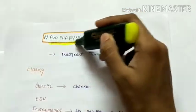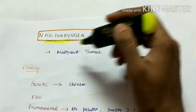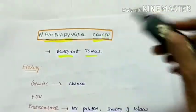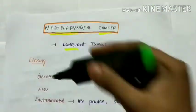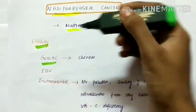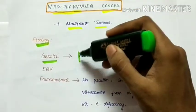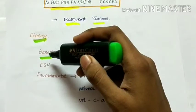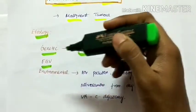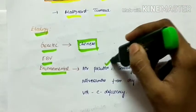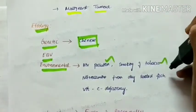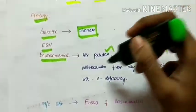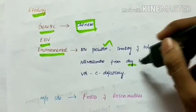Let's discuss nasopharyngeal carcinoma, which is a malignant tumor of the nasopharynx. Etiology: The genetic causes - nasopharyngeal carcinoma is more commonly seen in Chinese population and is associated with Epstein-Barr virus infection. Environmental causes include air pollution, smoking of tobacco, and nitrosamine which is seen in dry salted fish.